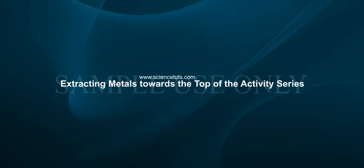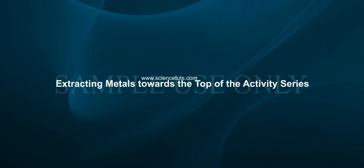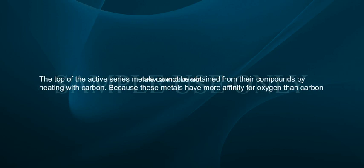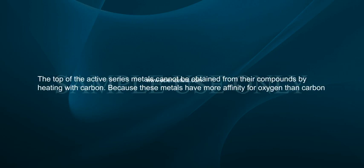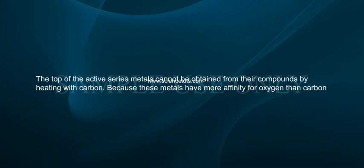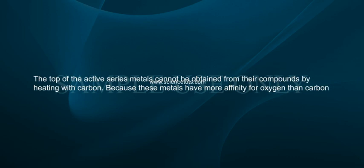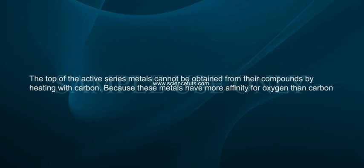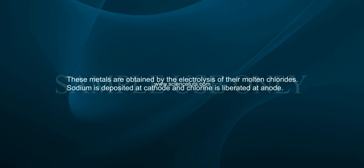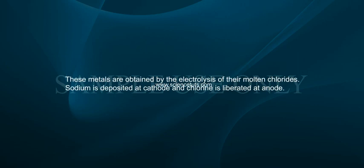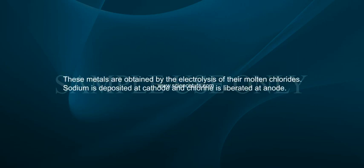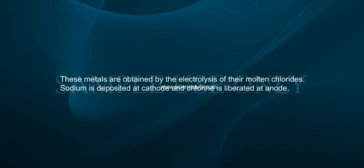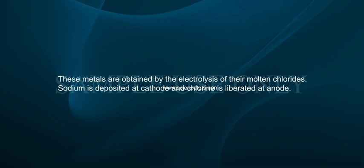Extracting metals towards the top of the activity series. The metals at the top of the activity series cannot be obtained from their compounds by heating with carbon, because these metals have more affinity for oxygen than carbon. These metals are obtained by the electrolysis of their molten chlorides. Sodium is deposited at the cathode and chlorine is liberated at the anode.